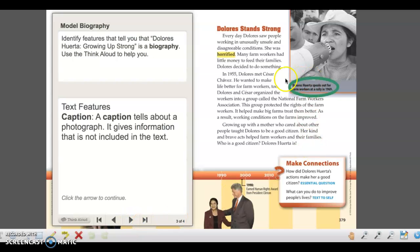We see circled in green the caption. And a caption tells about a photograph. It gives information that is not included in the text. So we're not going to find this information here where it says Dolores Huerta speaks out for farm workers at a rally in 1969. That information is not here in these three paragraphs.